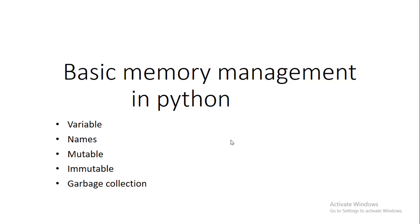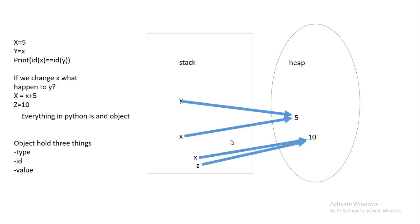Let's look at some examples of how Python memory works. We have a simple code: x equals 5, y equals x, and we print the id. What happens is Python creates a reference x on your stack memory and assigns the value — the object — on your heap memory. Each object in Python has a type, an id, and a value. Here the type is integer, integers are immutable, and the value is 5.